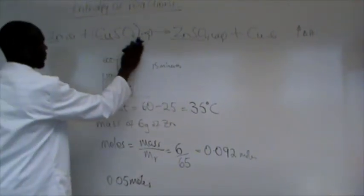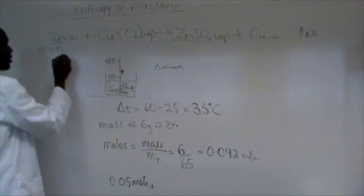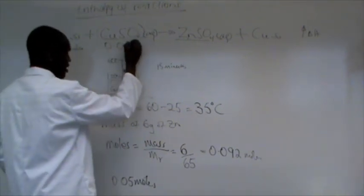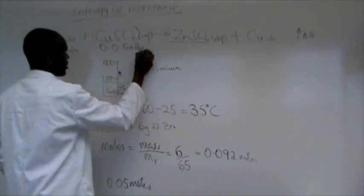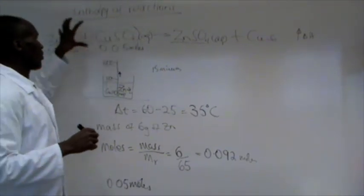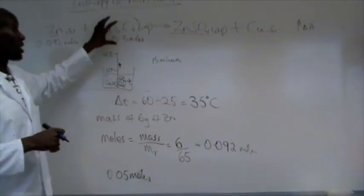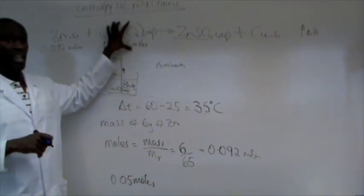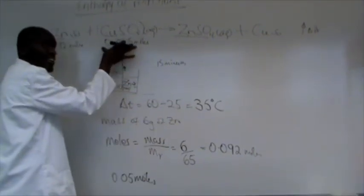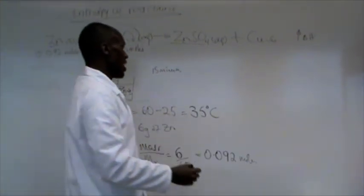So, over here, what we have is 0.0923 moles of zinc and 0.05 moles of copper sulfate. Now, looking at that, in that reaction, which of them was completely used up? Copper sulfate. Copper sulfate was completely used up. Simply because it has fewer moles. Now, in that case, what we do is we consider the fewer moles in our calculation. Does that make sense?